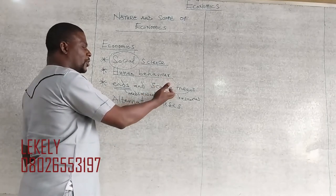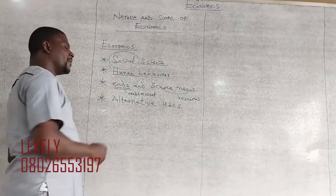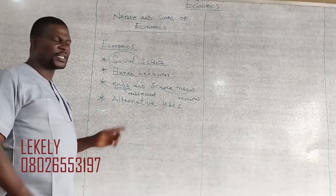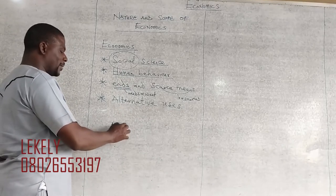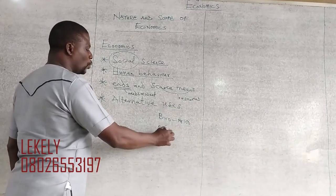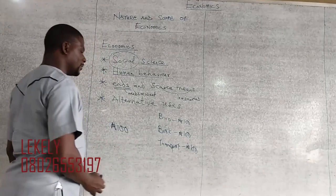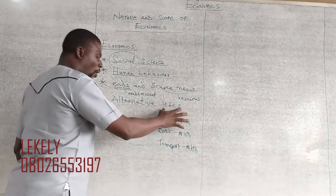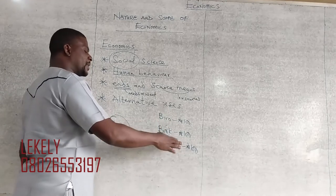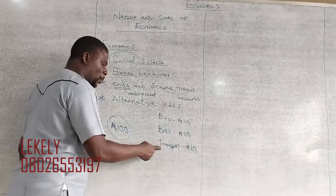The resources you have are not enough, and you want to use them to meet the needs you have. Because the resources you have can be used in different ways for your needs — that is what we mean by alternative uses. For example, somebody has 100 Naira. He needs food which costs 100 Naira, a book which costs 100 Naira, and transport which also costs 100 Naira. These are scarce resources with alternative uses: he can buy food and leave book and transport, buy book and leave food and transport, or pay transport and leave food and book.